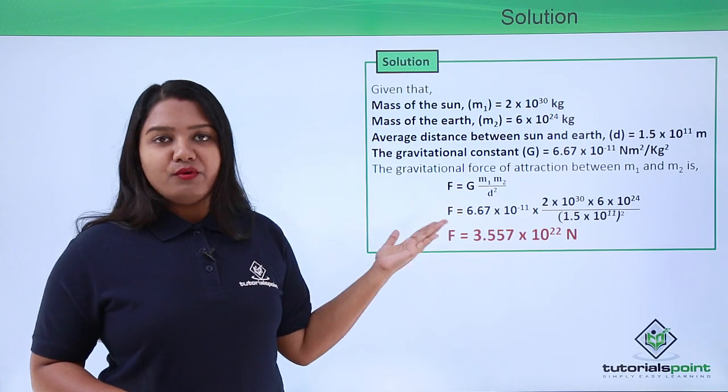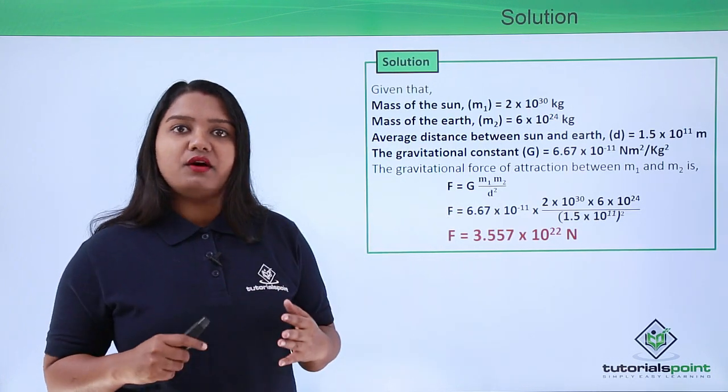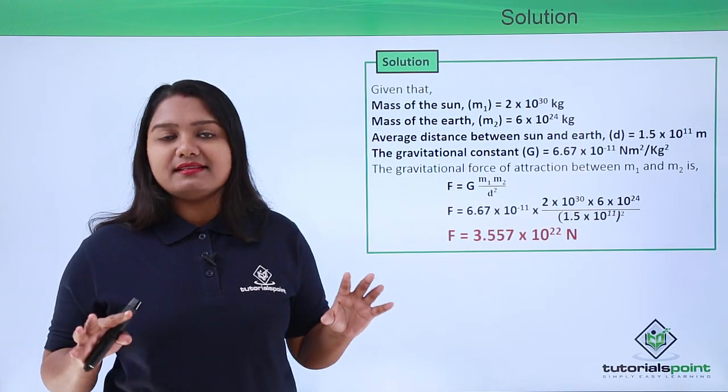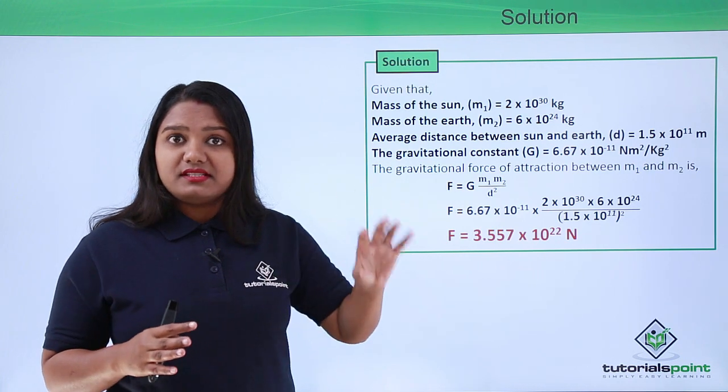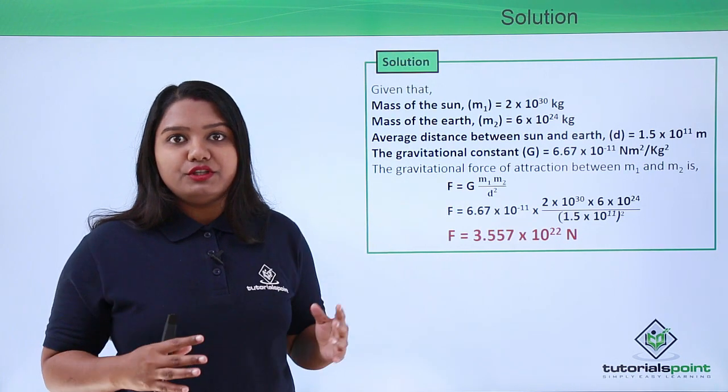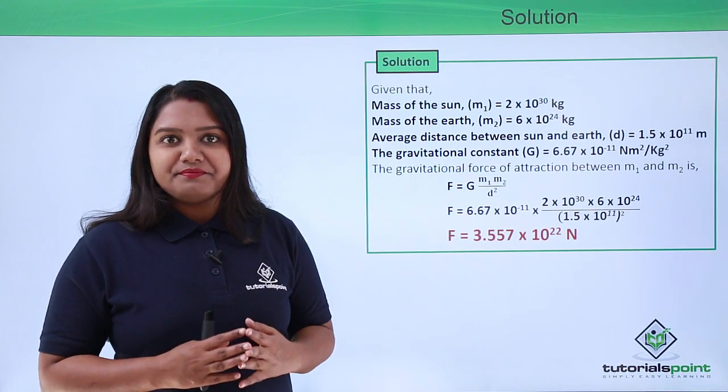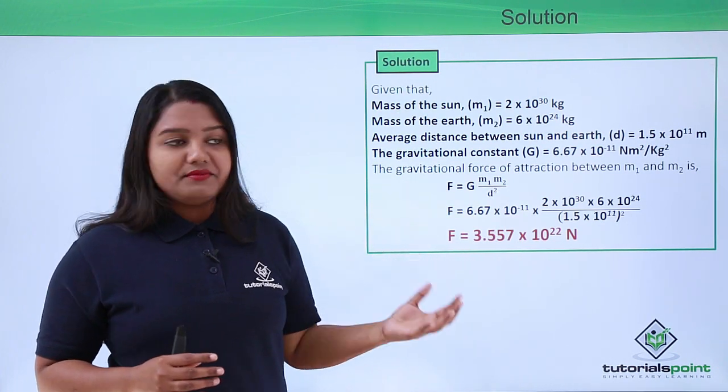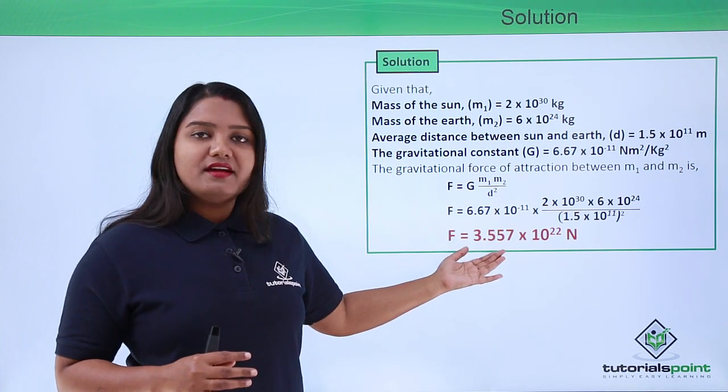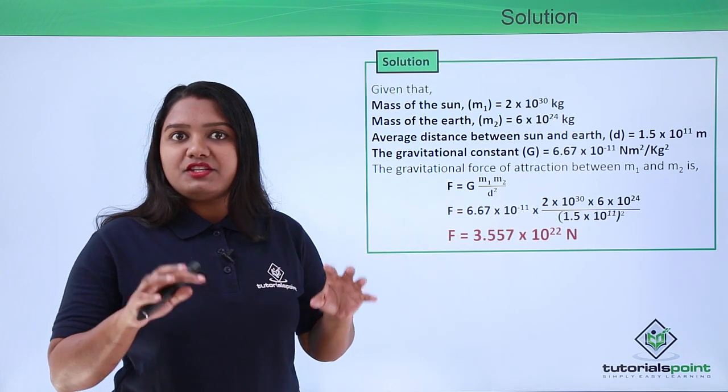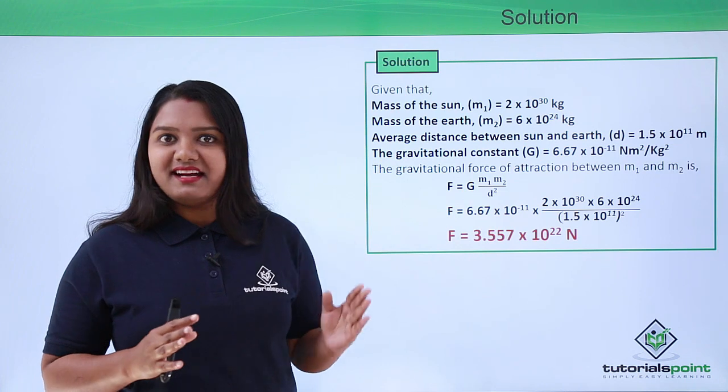Such a large force of gravity is because the masses of the Sun and the Earth are huge compared to the masses that we see in our daily life. That is the reason why we have such a huge force of attraction between such large masses - the Sun and the Earth.